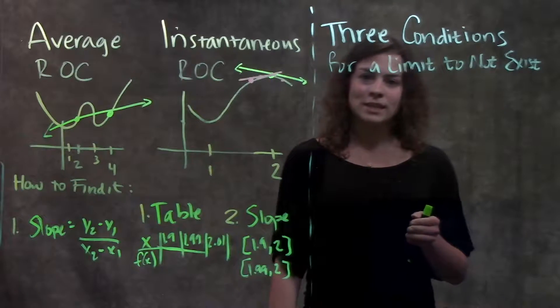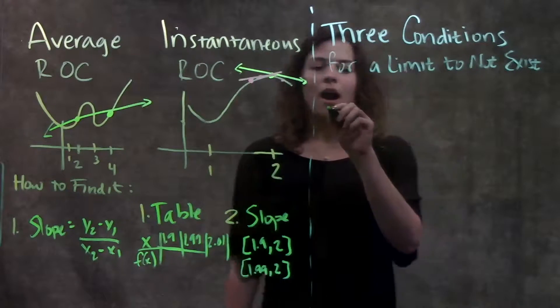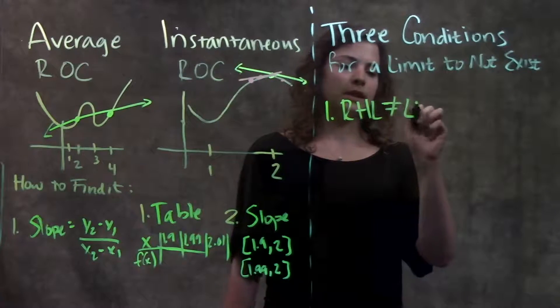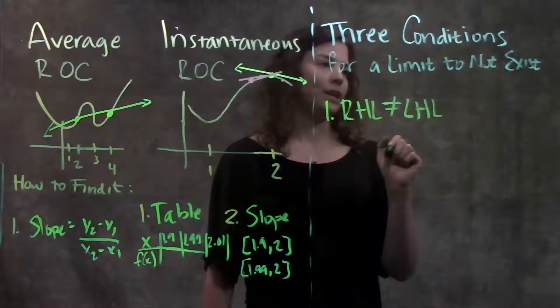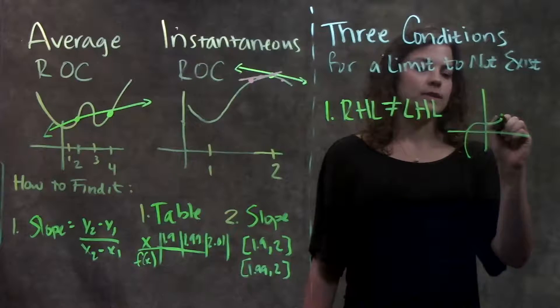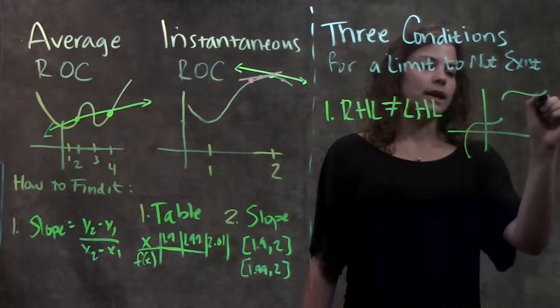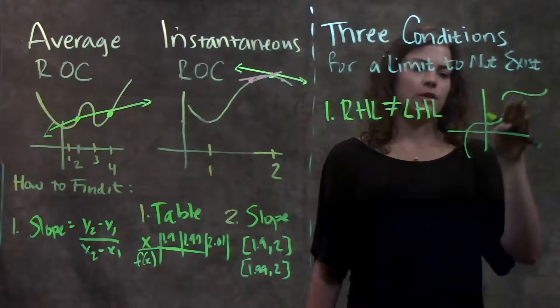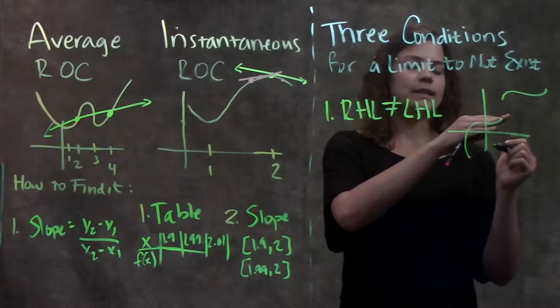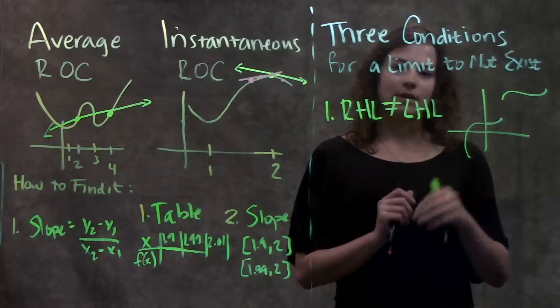Moving on to the three conditions for a limit to not exist. Our first one is if the right-hand limit is not equal to the left-hand limit. What that looks like on a graph is, let's say, left-hand is going here, and the right-hand, it jumped up, it looks like this now. As you can see, from the left-hand side, it's approaching a different value than what it is at the right-hand side.